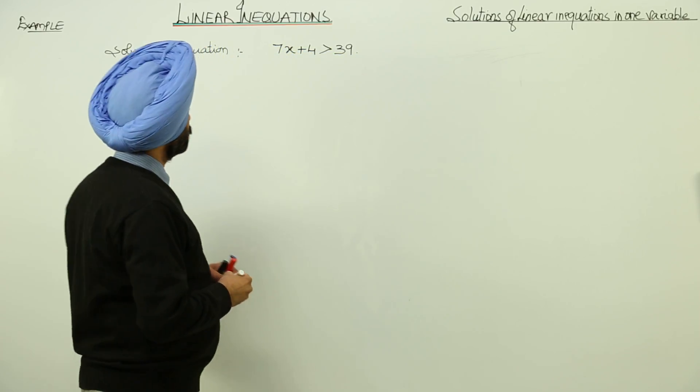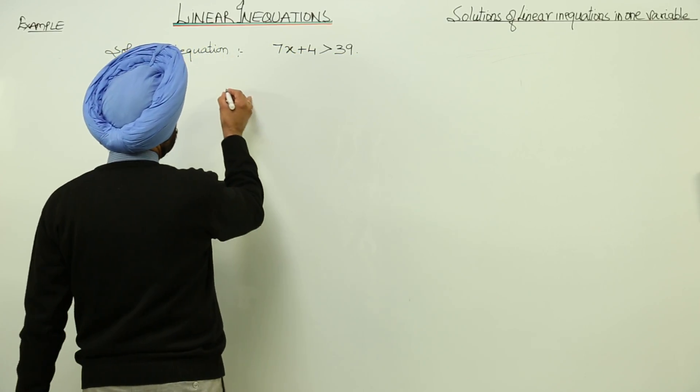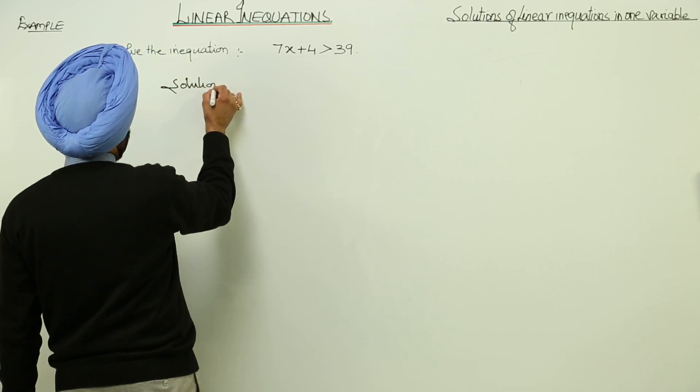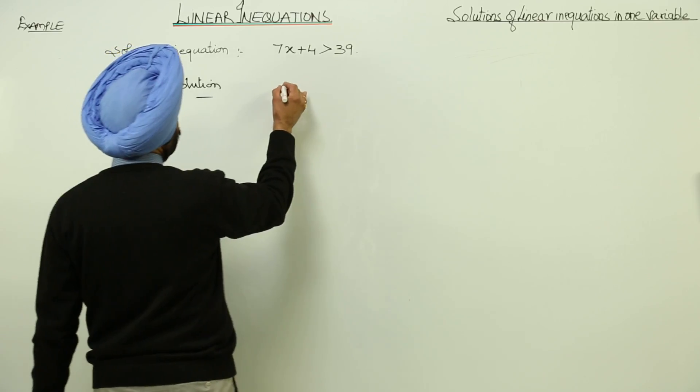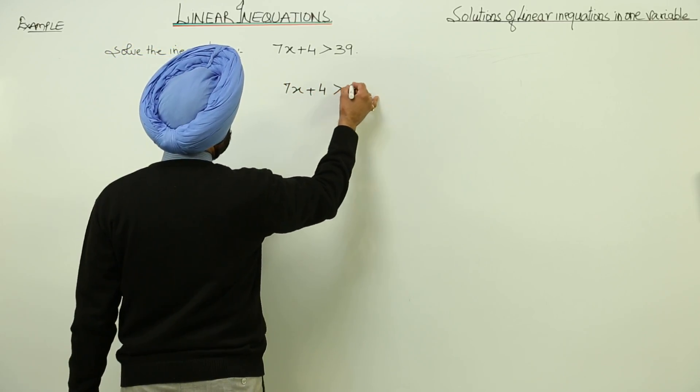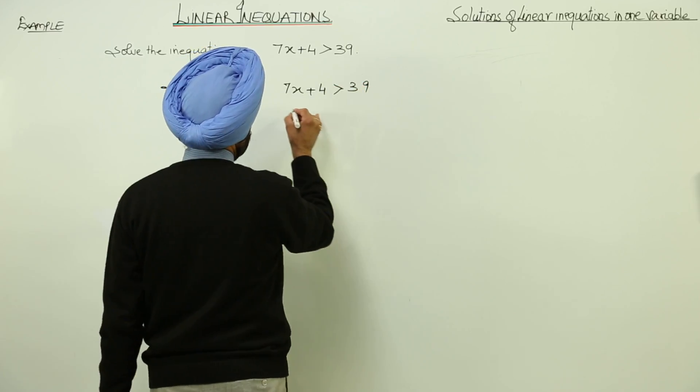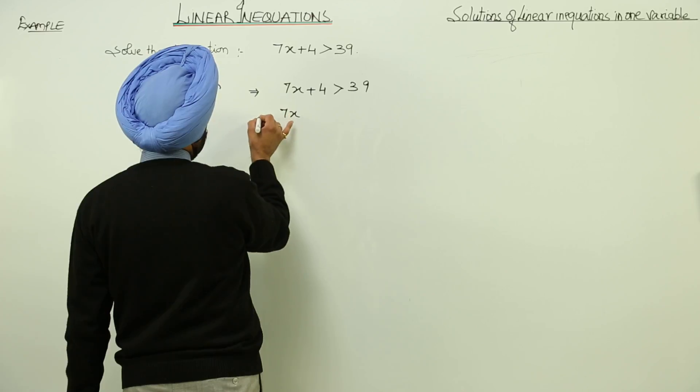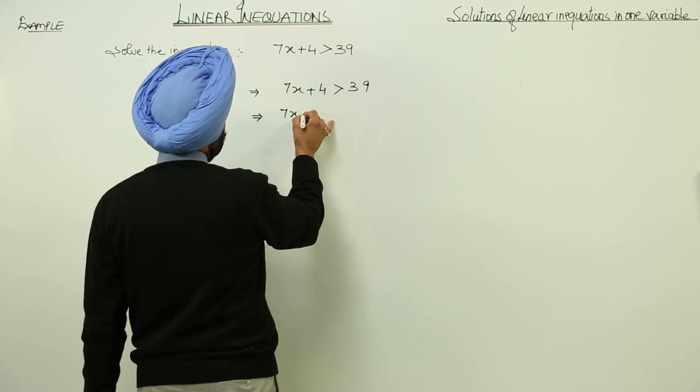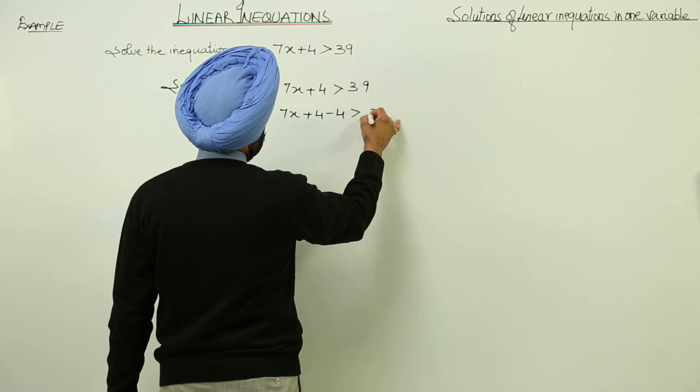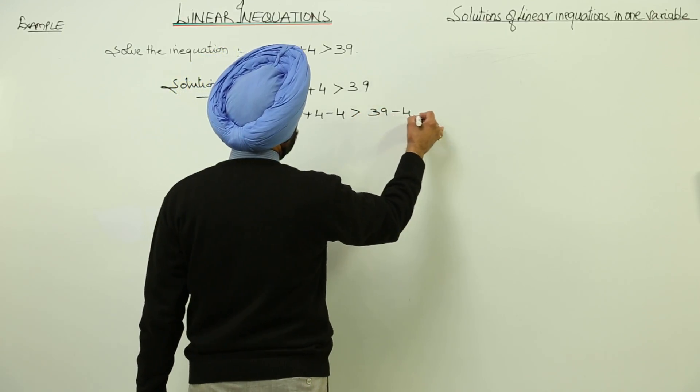Now just look at what I am writing. 7x plus 4 is greater than 39. 7x plus 4 negative 4 is greater than 39 negative 4.